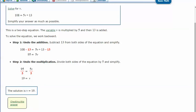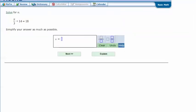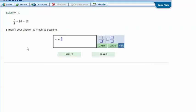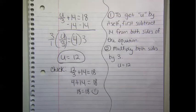Let's try another one. Solve for u: u over 3 plus 14 equals 18. Here are my notes. To get u by itself, the first thing we need to do is subtract 14 from both sides of the equation. Then we have u divided by 3 equals 4.